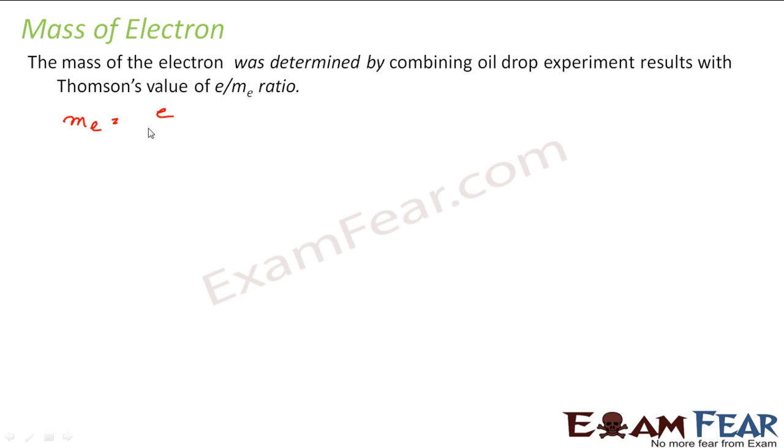So mass of electron is nothing but E divided by E by M. This is what Millikan has found, right here was what Millikan has found, and this is what Thomson